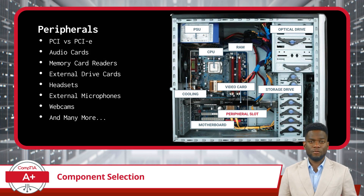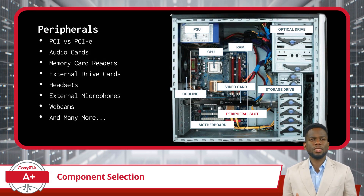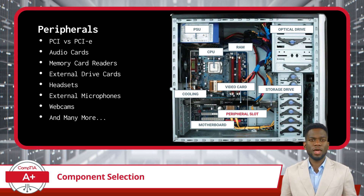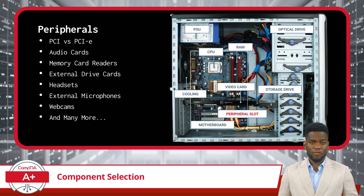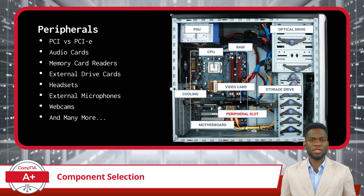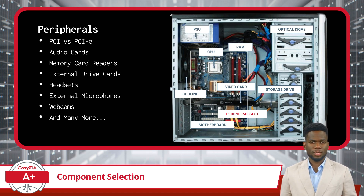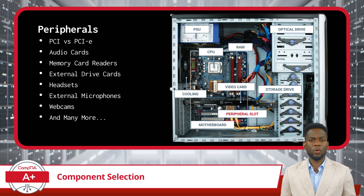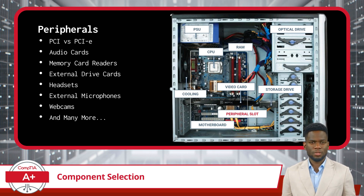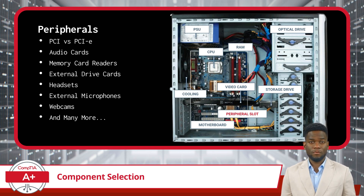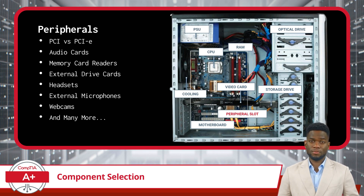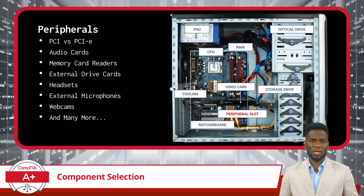Moving on, we have peripherals, which serve to extend the functionality of a PC. Peripheral slots, such as PCI and PCI-E slots, allow for the addition of expansion cards, enriching the system with additional features. Among these are audio cards capable of providing surround sound and high-end audio output that well exceeds on-board sound options — great for gaming and multimedia setups. Then there are memory card readers that provide seamless data transfer from various memory card form factors, perfect for media sharing. Or you can utilize an external drive card with the ability to support expanded storage options and data backup capabilities.